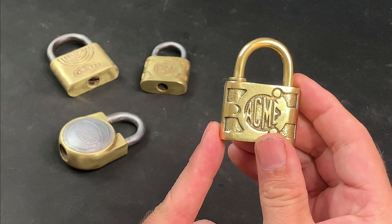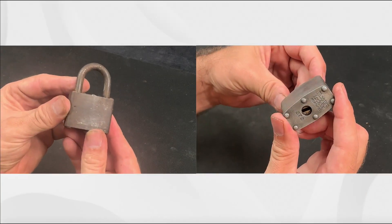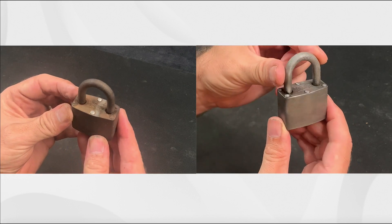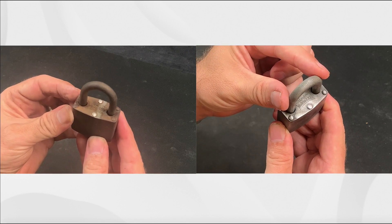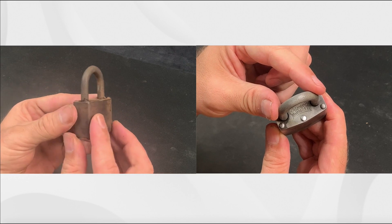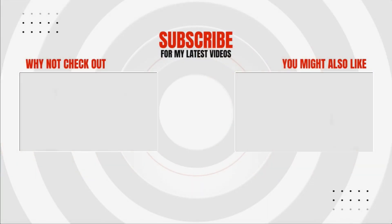So there you have it, two methods to breathe new life into rusting vintage locks. I found this a really satisfying project, it's not difficult so I'd encourage you to give it a go yourself. I hope you enjoyed this episode, thanks for watching and until next time, take good care.